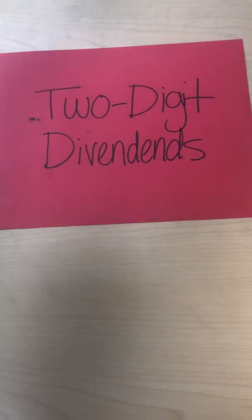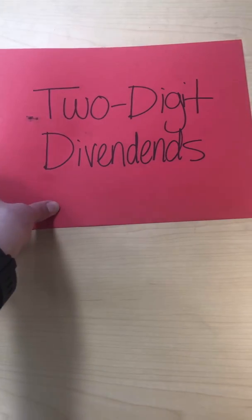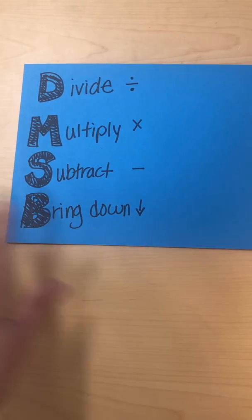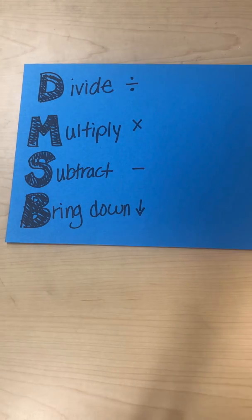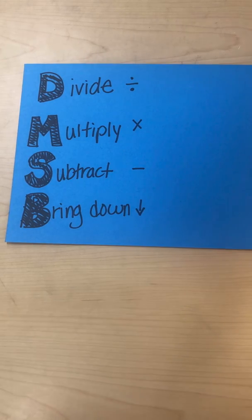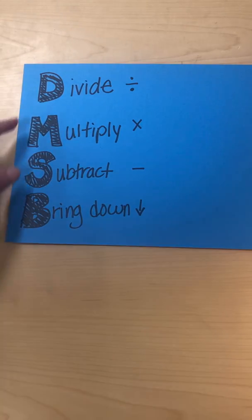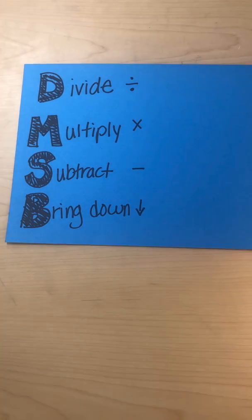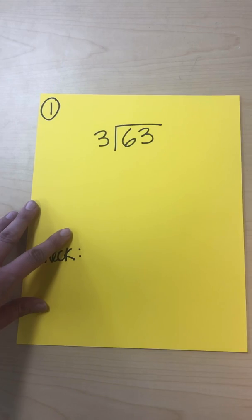For our lesson today the number on the inside is going to be two digits. Later on it will be longer, but today we're starting with something smaller. Before we divide, it's important to know all the steps for long division: D-M-S-B, which means divide, multiply, subtract, bring down. There are many ways to remember these — 'don't miss school bus,' 'dad mom sister brother,' 'does McDonald's sell burgers' — do whatever helps you.